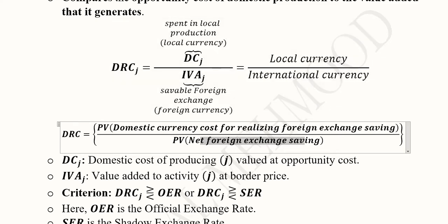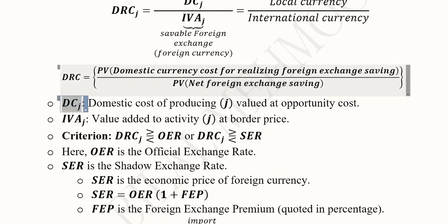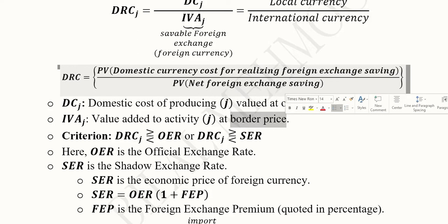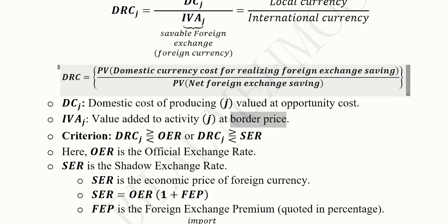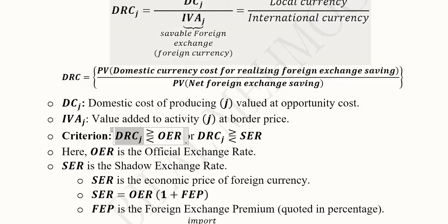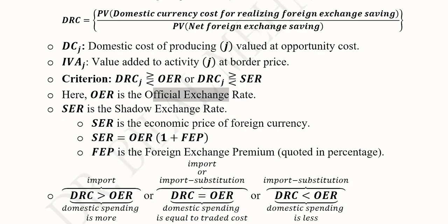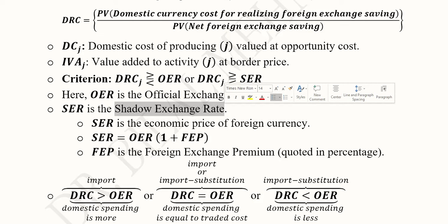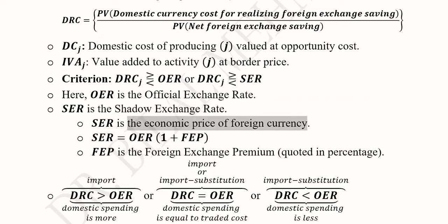DC_J stands for domestic cost of activity J, and IVA is the imported value addition at border price — the price charged at the border when importing. The criterion is simply to compare the domestic resource cost found with this formula against the official exchange rate (OER) or the shadow exchange rate (SER). The shadow exchange rate is the economic price of foreign currency, whereas the official exchange rate is the financial price.